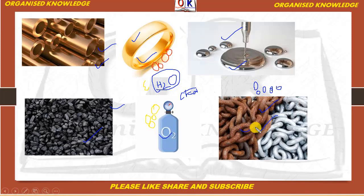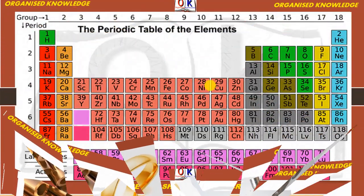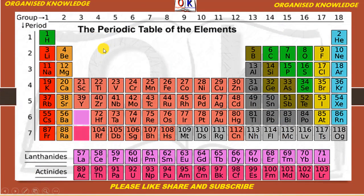Inki characteristics ke base pe hum jo elements hain unko alag alag categorize karte hain. Inki jo characteristics hain usi ke base pe hum ne elements ko three categories mein divide kiya hai. Yoh hai periodic table of elements — yaani avart sarni, tatwa ki avart sarni. Aur is mein aap dekh sakti ho iske andar bahut sare elements hain, tatwa hain, aur woh sare pure substances hain.